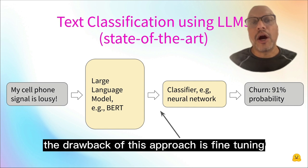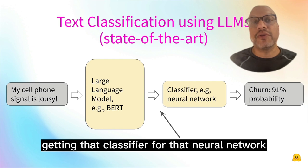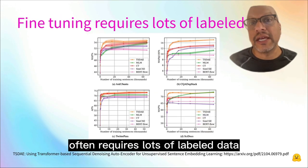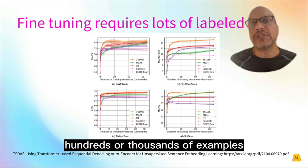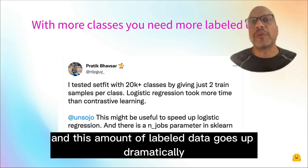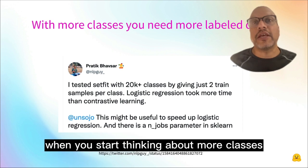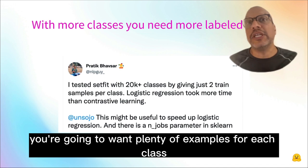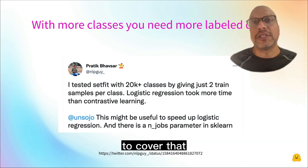The drawback of this approach is fine-tuning — getting that classifier for the neural network often requires lots of labeled data, hundreds or thousands of examples. And this amount of labeled data goes up dramatically when you start thinking about more classes, because you're going to want plenty of examples for each class to cover that.